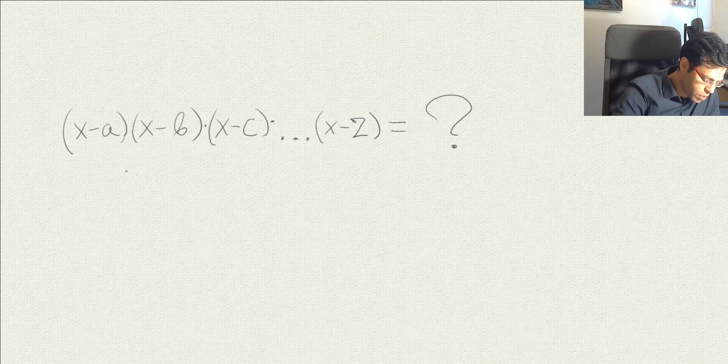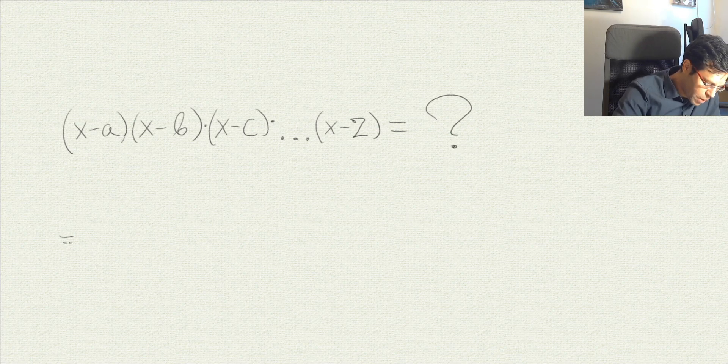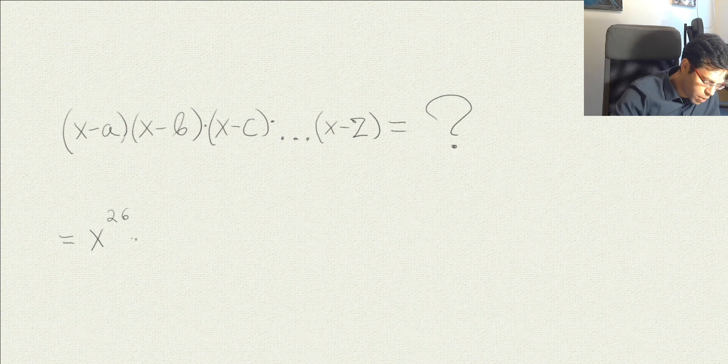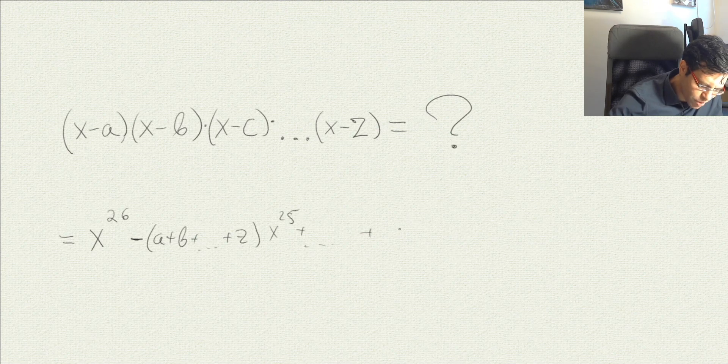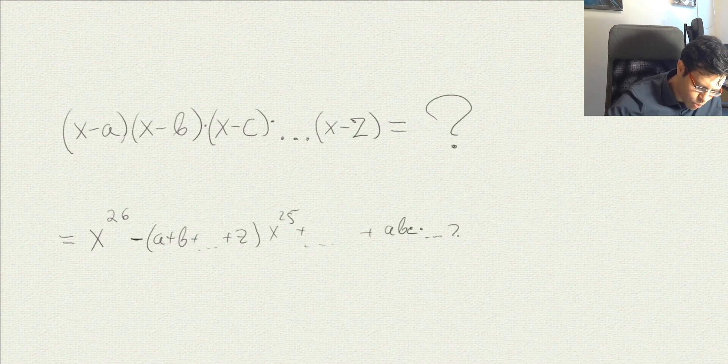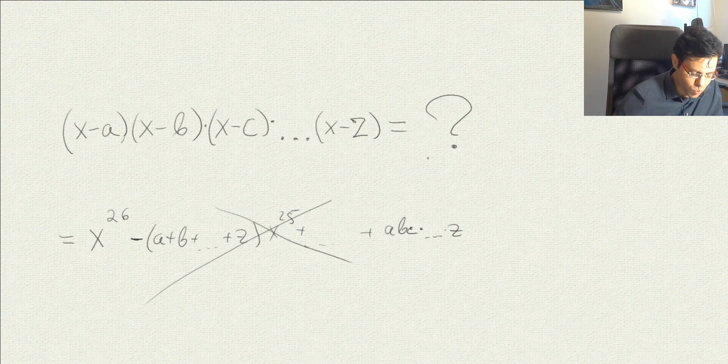So if we think about opening it up with the Vieta formula, so we have 26 letters in the alphabet, so something like x to the power of 26 minus a plus b all the way up to z here times x to the power of 25 and all the way until we get to the product a times b times c times all the way up to z. Well, that's not what we want because this is making things even more complicated than it's written in this way.